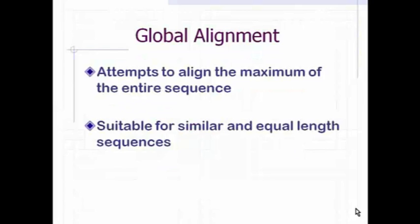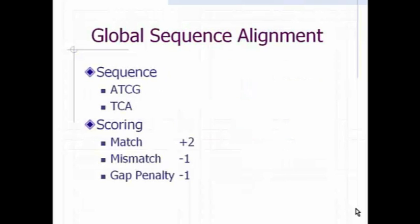Global alignment attempts to align the maximum of the entire sequence and it is suitable for similar and equivalent sequences. Suppose we have given two sequences like ATCG and TCA, and we have the scoring of plus 2 for match, minus 1 for mismatch, and minus 1 for gap penalty, and we have to solve the sequences by global sequence alignment.